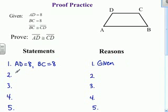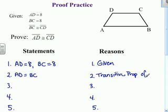So if those two are both equal to 8, then they must be equal to each other. So I'm going to say AD is equal to BC and that would be the transitive property. I'm going to put down transitive property, and it's transitive property of equality because they're equal signs.